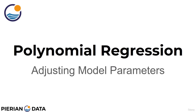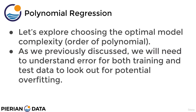Welcome back everyone to our continued discussion of polynomial regression. Now that we understand the bias-variance trade-off including models that underfit or overfit, we can go back and adjust model parameters for polynomial regression — specifically what order we should choose for our polynomial feature set. We're going to explore how to choose the optimal model complexity, that is the order of the polynomial. We can do this visually by measuring our error against the degree of complexity of the polynomial.